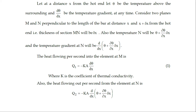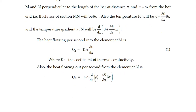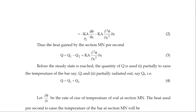The heat flowing out per second from the element at N is q₂ = −kA · d/dx[θ + (∂θ/∂x)·δx]. Expanding this gives q₂ = −kA(dθ/dx) − kA(∂²θ/∂x²)·δx. This is equation 2.